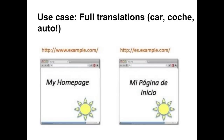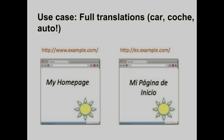The second use case is when a website expands internationally with full translations of content. So the word 'car' on one page is 'coche' on another and 'auto' on another. For example, www.example.com is written in English, while es.example.com is written entirely in Spanish. These pages are fully translated so that 'my home page' becomes 'mi pagina de inicio.' Hopefully one or several of these use cases will apply to your site.